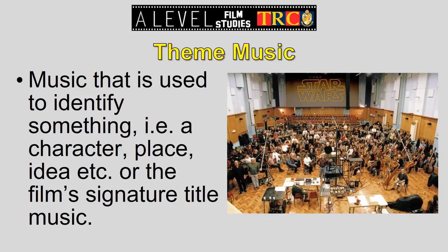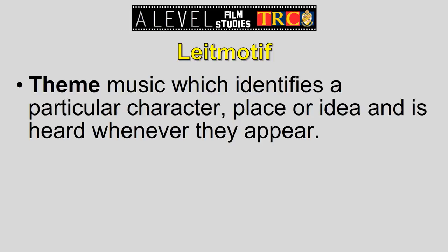Theme music identifies a character, place, or idea — it's the film's signature title music. Think of the famous Star Wars music, or Jaws, or Superman — all written by John Williams, one of the great geniuses of film scores. Usually you're not meant to notice this music; it works subliminally. A leitmotif is a kind of theme music that specifically identifies a particular character, place, or idea. It recurs whenever they appear and repeats through the movie — they may adjust the instruments, speed, or arrangement — but it's there to identify things, principally characters.